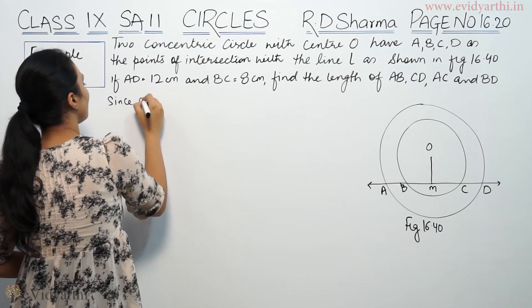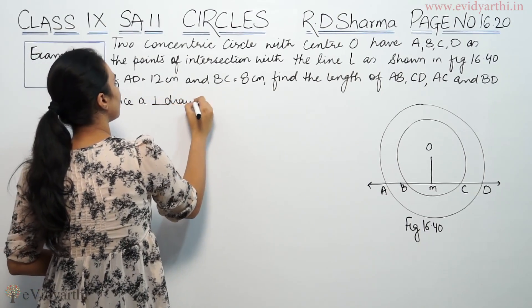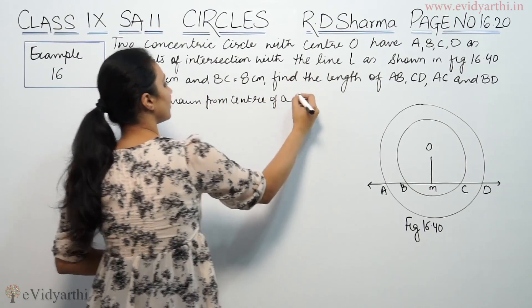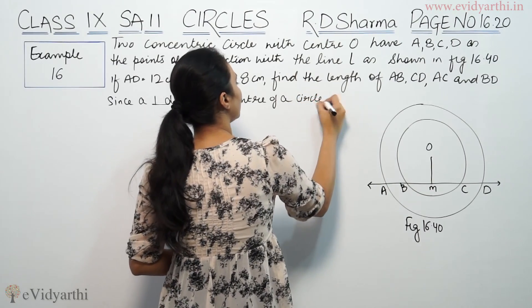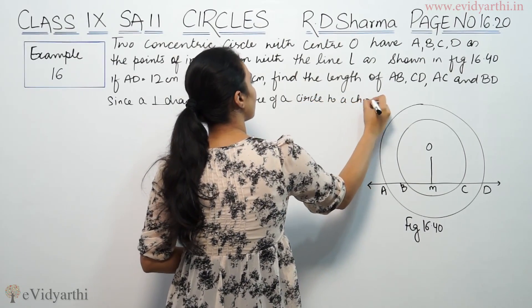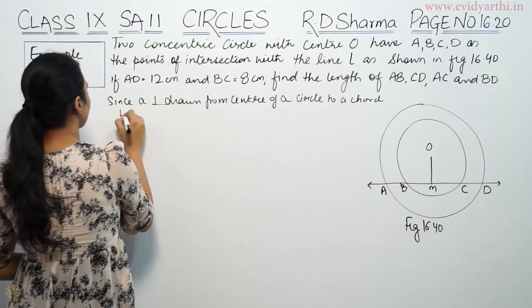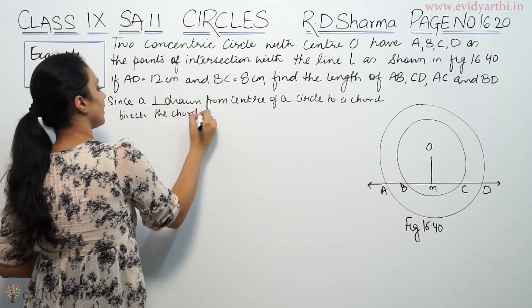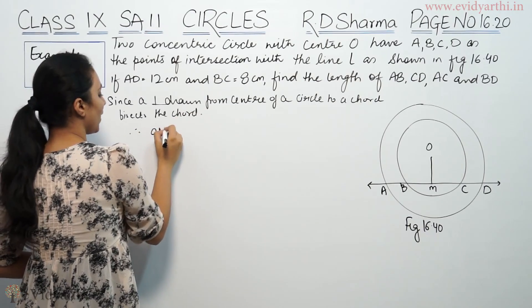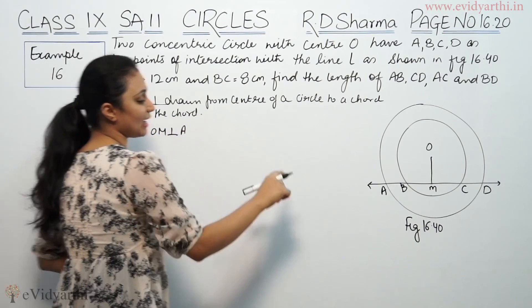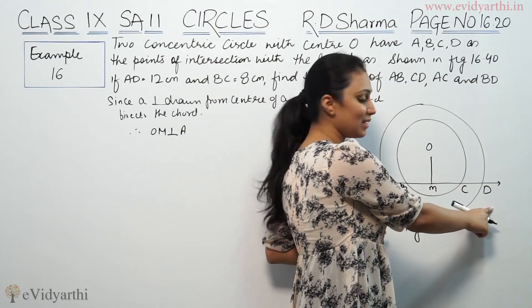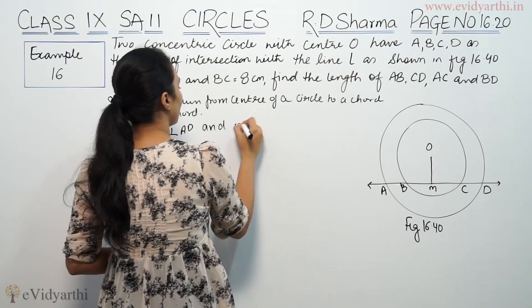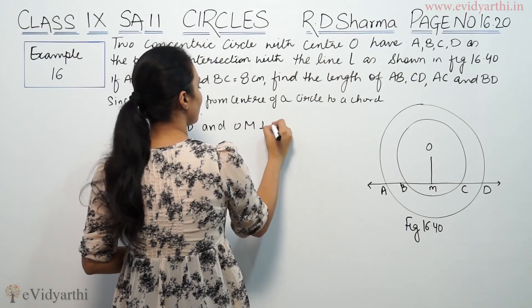Since a perpendicular drawn from center of a circle to a chord bisects the chord, therefore OM is perpendicular to BC. This means that OM is perpendicular to BC.